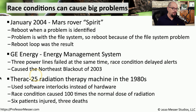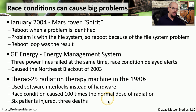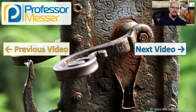A deadly race condition occurred with a radiation therapy machine in the 1980s that used software as a security mechanism. If operators changed the software settings too quickly, the software interlocks failed, causing a race condition that delivered 100 times the normal dose of radiation. This resulted in six patients being injured and three patients dying. You can see how race conditions can be caused by many different things, so it's important that developers always consider every possible scenario and plan for that in their software.